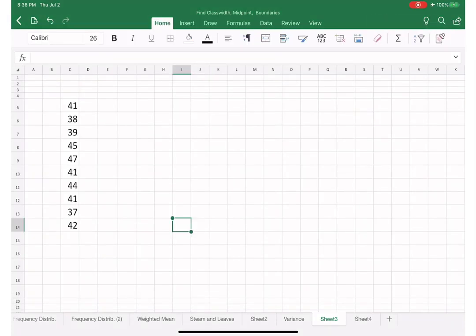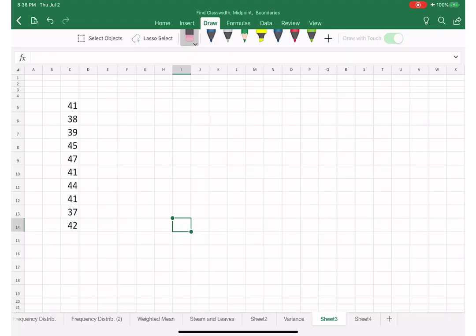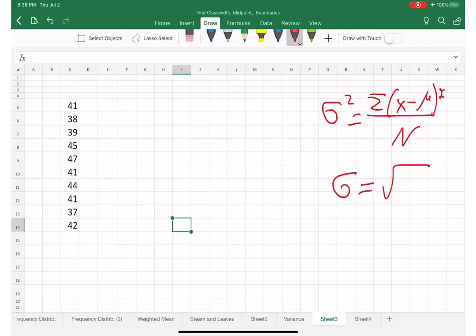I'm going to show you how to calculate population variance and the population standard deviation, which is equal to sigma squared.